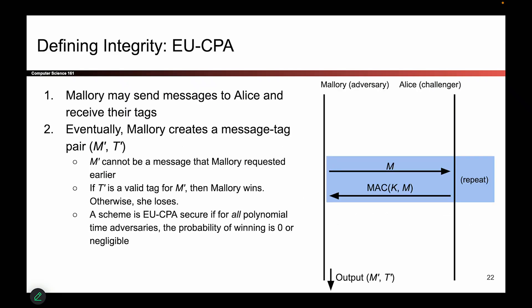Here's the game — it's a bit shorter than the IND-CPA game. The first thing we'll do is create a query phase, similar to the IND-CPA game. This is the phase where Mallory gets to exercise her powers, and this is where the CPA — chosen plaintext attack — comes from. That's the threat model we talked about.